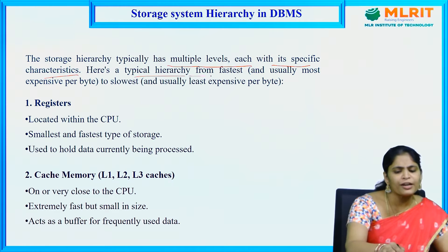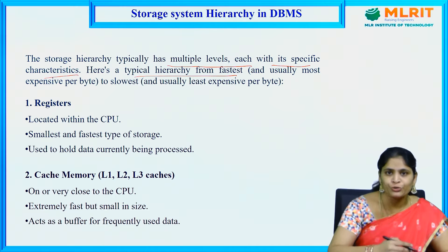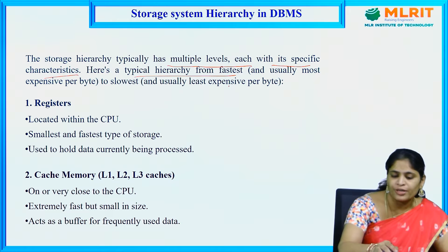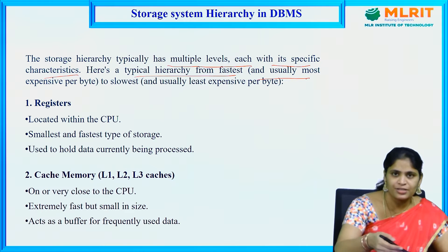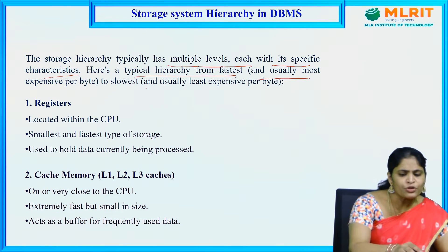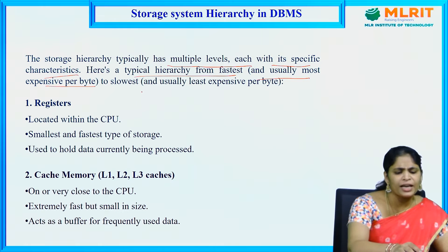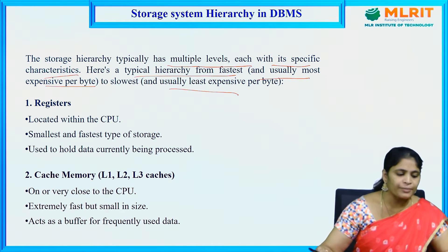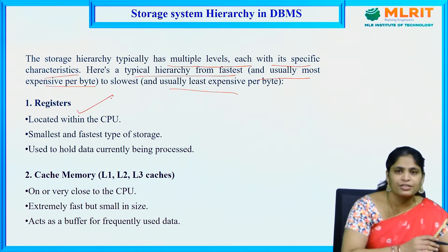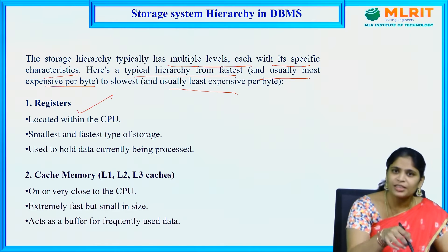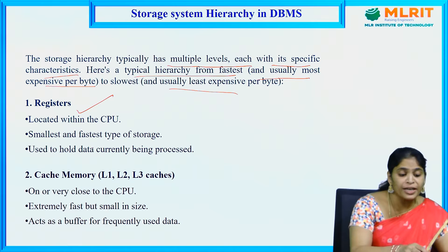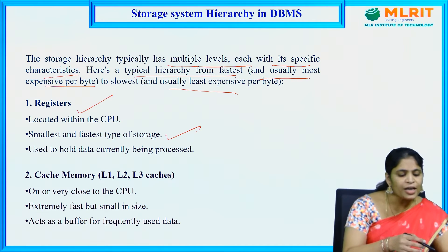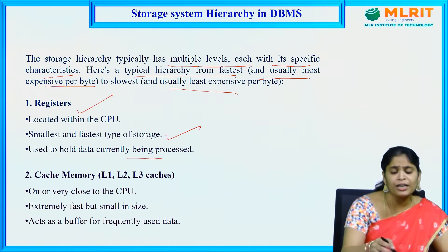This typical hierarchy goes from the fastest to the slowest. The fastest is usually the most expensive per byte, and the slowest is usually the least expensive per byte. The first one is registers — located within the CPU (central processing unit), they are the smallest and fastest type of storage, used to hold data currently being processed.